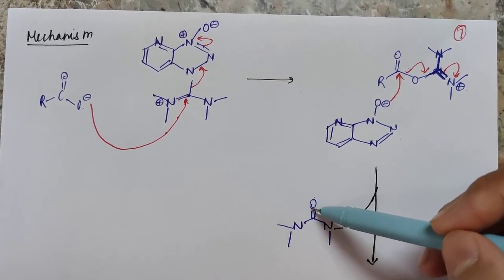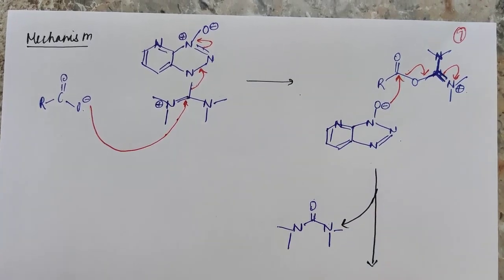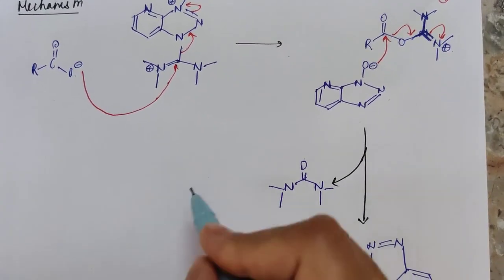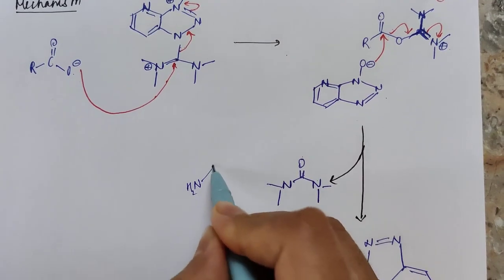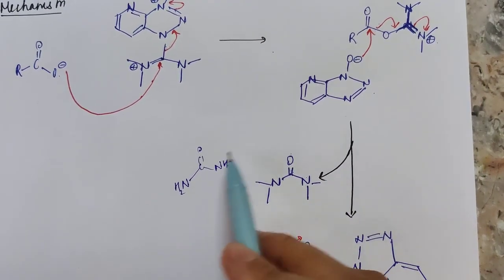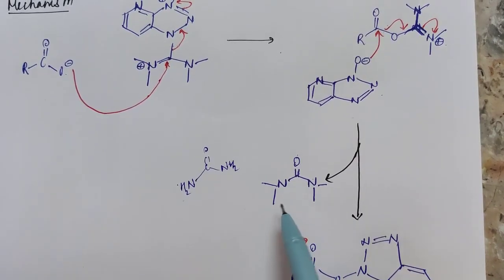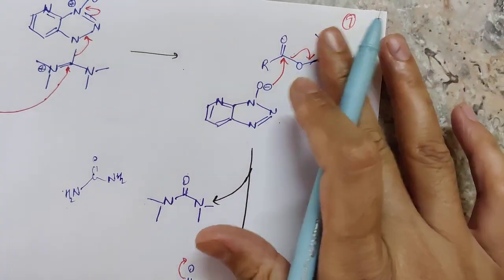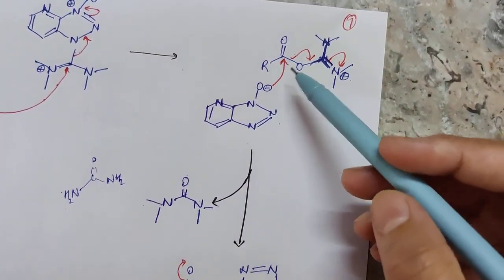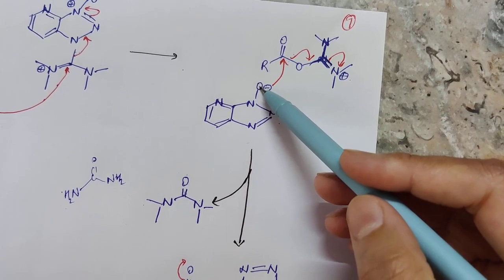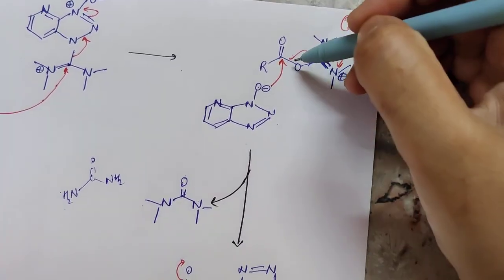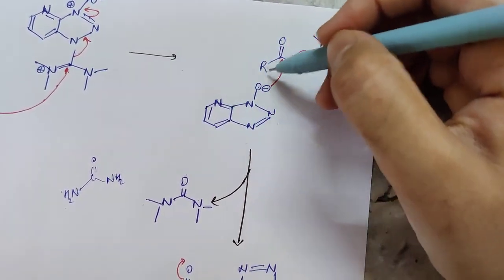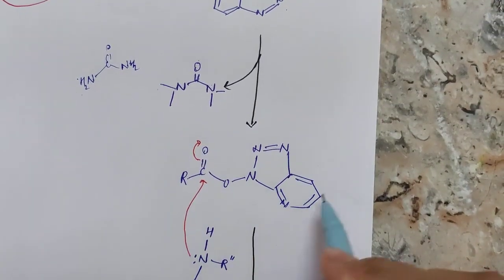The negatively charged moiety attacks the carbonyl carbon and bond cleavage takes place. A new carbonyl bond forms, the pi electrons shift to the positively charged nitrogen making it neutral. Both nitrogens are now neutral, and a carbonyl is formed — essentially tetramethylurea, analogous to urea with all hydrogens replaced by methyl groups.